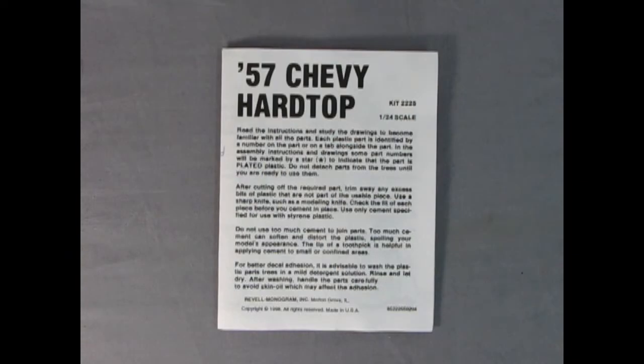There's not too much I can say on this model kit instruction sheet - there's not very many steps involved. The front page just says 57 Chevy hardtop with no drawing of the car. It's got the standard instructions about reading carefully, cutting off parts, and all that. The copyright is 1998, so this model came out around that time.